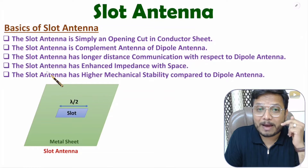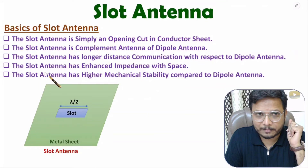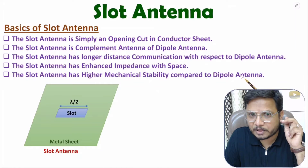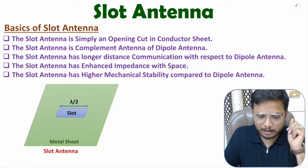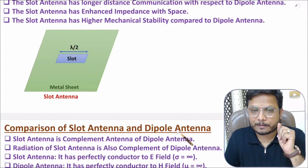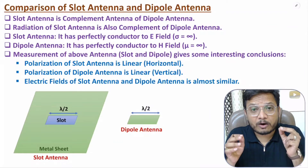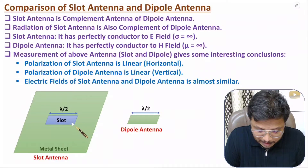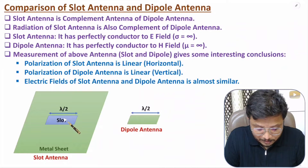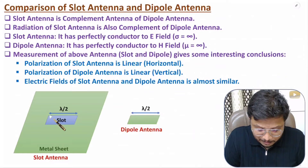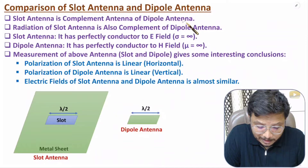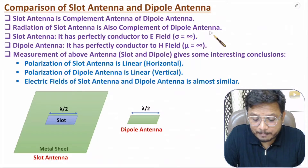Slot antenna also has higher mechanical stability compared to dipole antenna, which I'll explain in this video. Comparing slot antenna with dipole antenna: slot antenna is the complement of dipole antenna, as you can understand from geometry. Here we have a slot antenna with an opening cut of length lambda by 2. The complementary structure — having only metal of length lambda by 2 — is the dipole antenna.